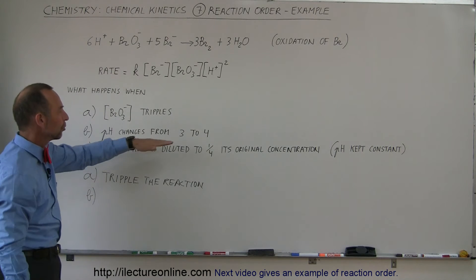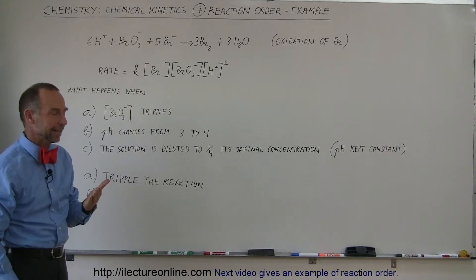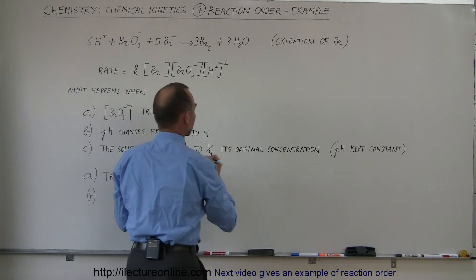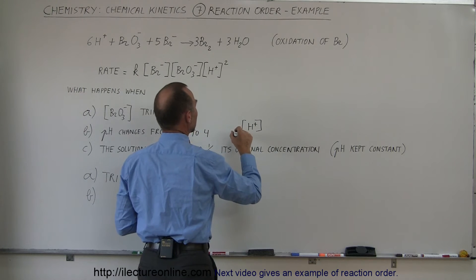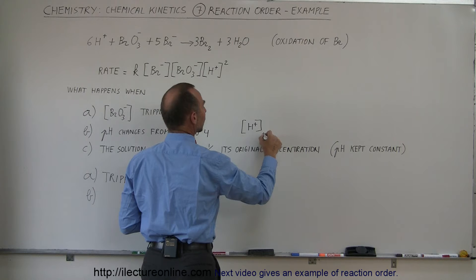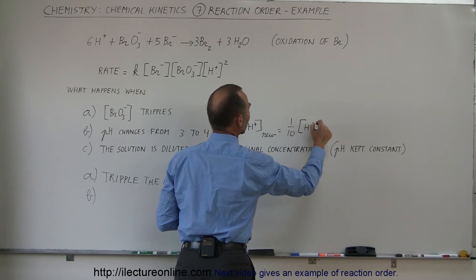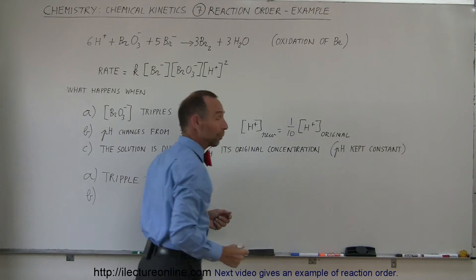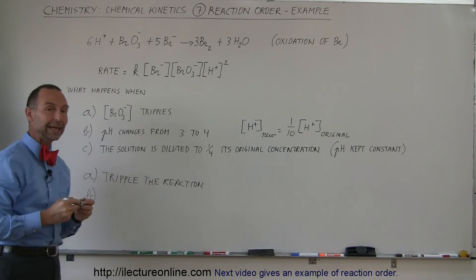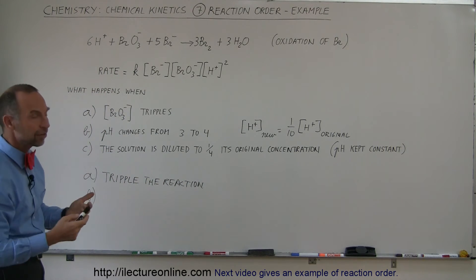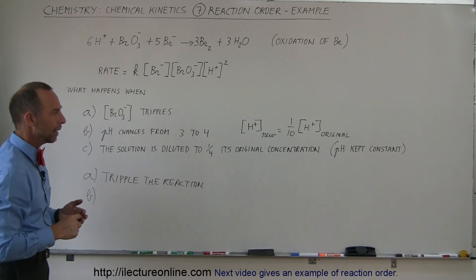So that means that the new concentration is equal to 1/10 the original concentration. That's what happens when we increase the pH by one number from 3 to 4. That simply means we now have only 10 percent or 1/10 the hydrogen ions in the solution that we had before when the pH was 3.